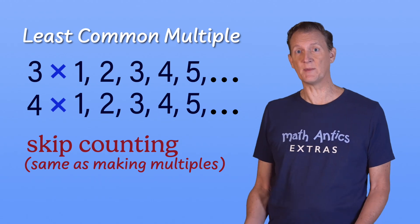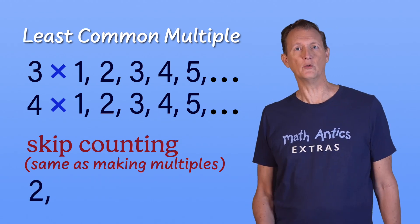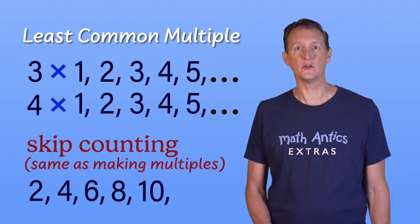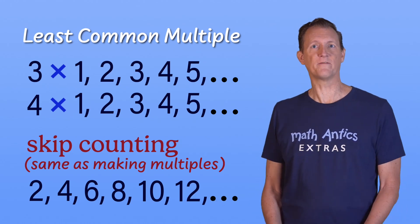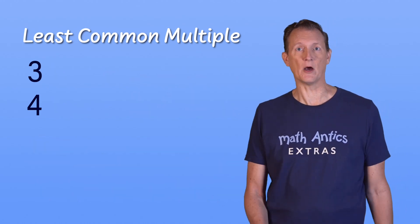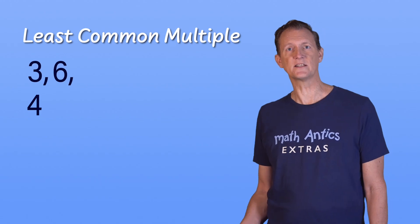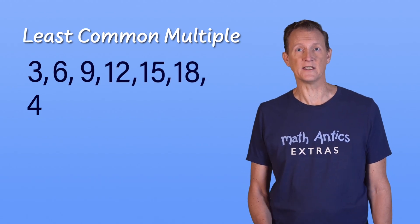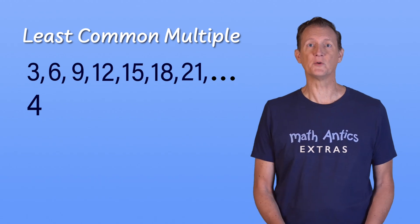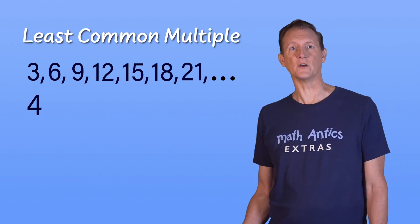Counting by 2's is just making multiples of 2: 2, 4, 6, 8, 10, 12, and so on. So to find multiples of 3, you can skip count by 3's: 3, 6, 9, 12, 15, 18, 21, and so on. And to find multiples of 4, you can skip count by 4's.